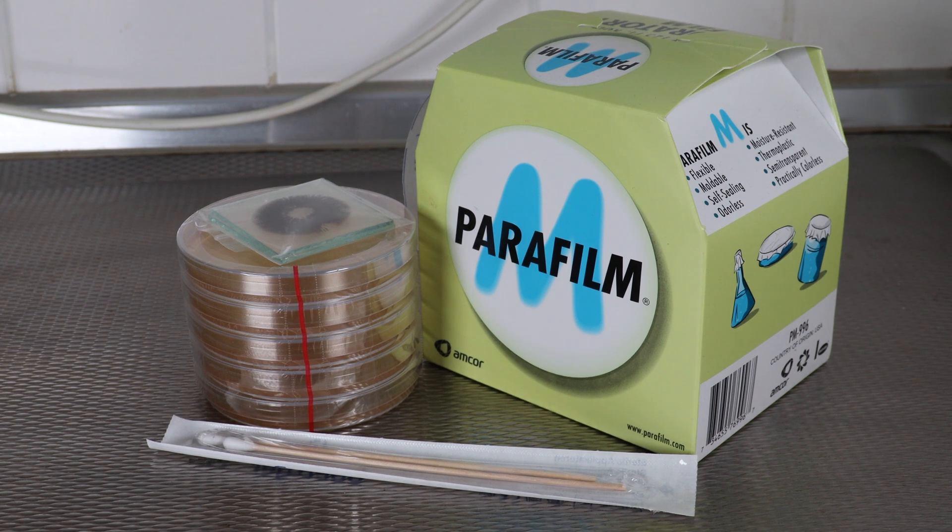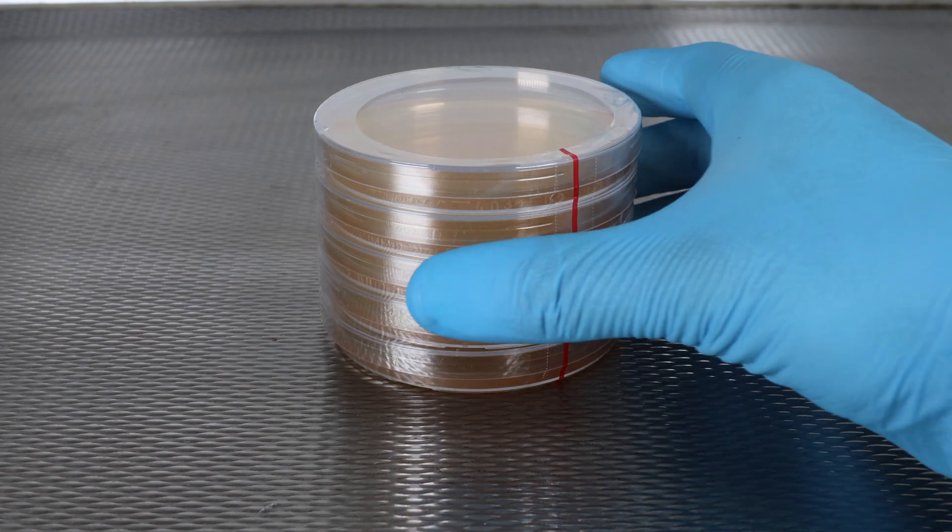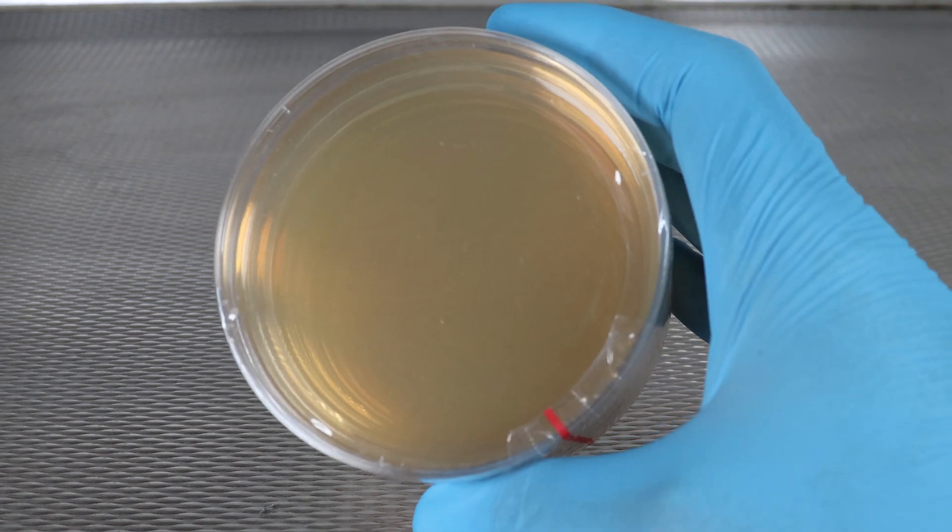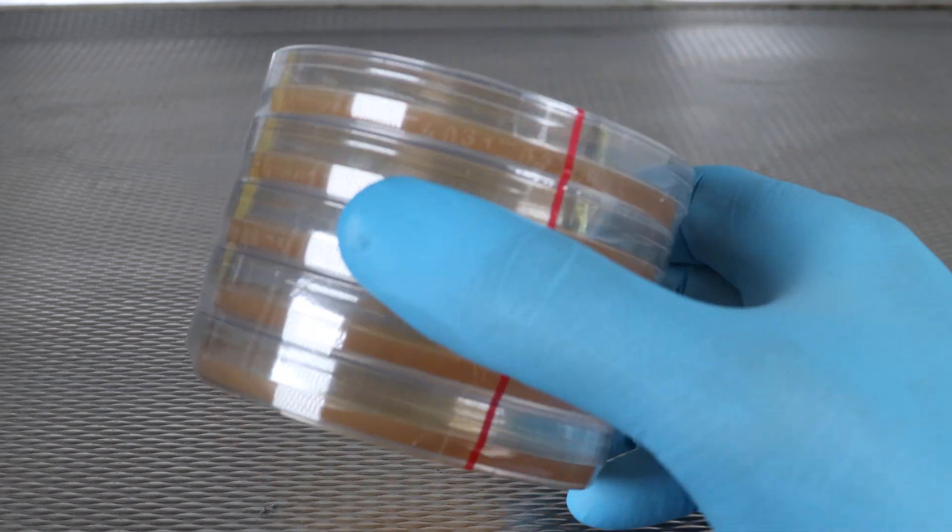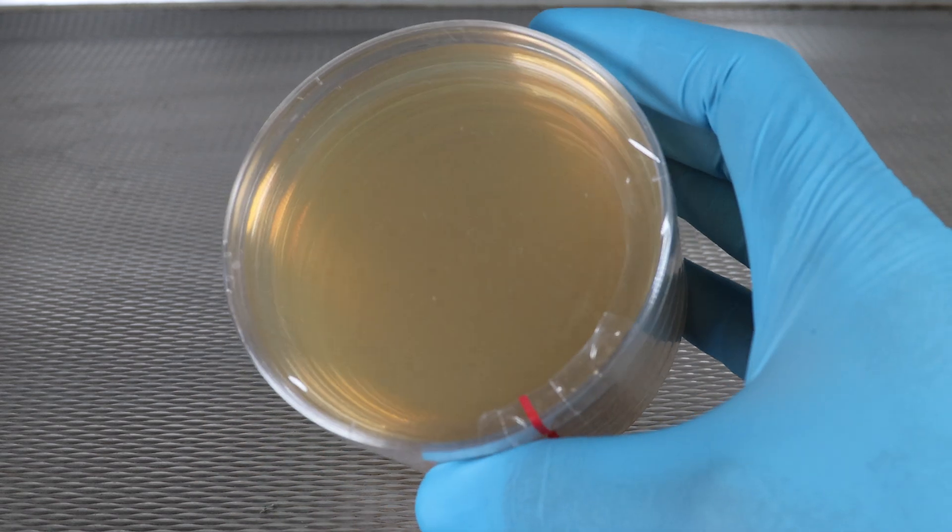To germinate spores on agar we're going to need a few things. Chief among these are agar petri dishes. Now some like to mix up their own agar. Deprave420 demonstrates this recently in an excellent video of his. The link's in the description.